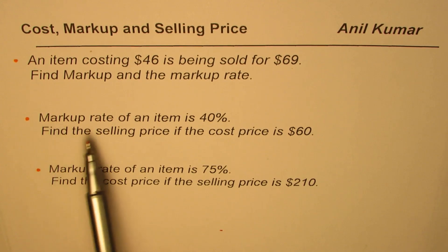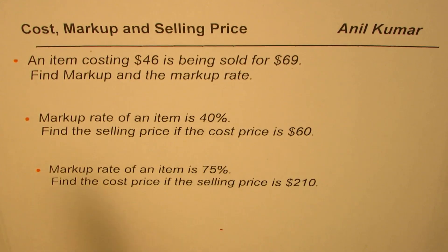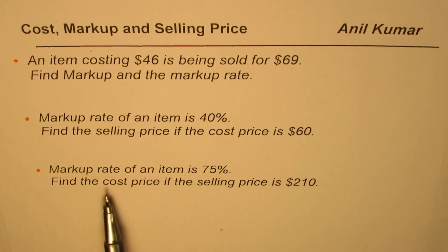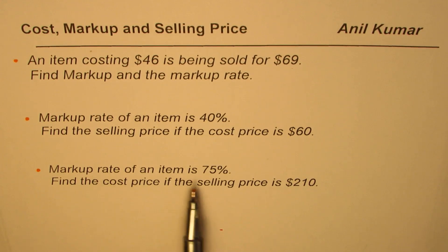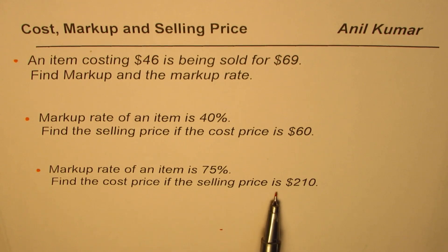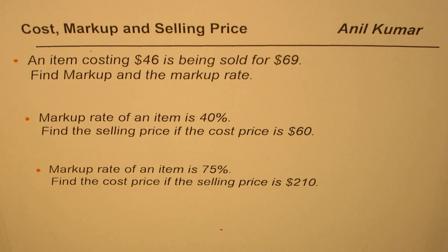The second question is: markup rate of an item is 40%, find the selling price if the cost price is $60. And the third one is: markup rate of an item is 75%, find the cost price if the selling price is $210. As you can see, we have three different examples relating cost, markup, and selling price — we know two of them and have to find the third. These are probably the possible combinations you might get in your test paper, so let us look into them one by one.